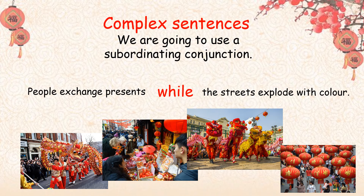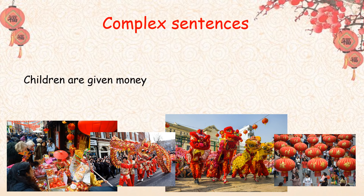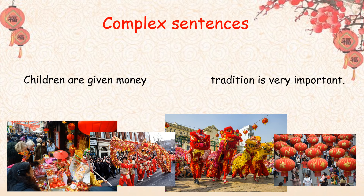Now, if you wanted to make that even better, you could add in some adjectives — an expanded noun phrase — just blow my socks off. Let's have a go at another one. Children are given money. We said they're given money to help them in the New Year. Tradition is very important — the tradition of Chinese New Year is very important, and a lot of people do celebrate this. These are two perfectly good clauses but a little bit boring, so: children are given money because tradition is very important.